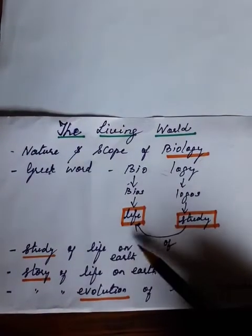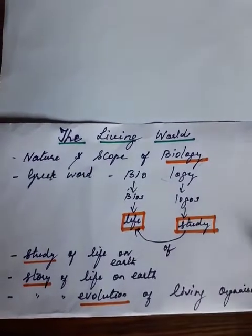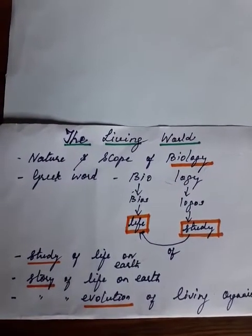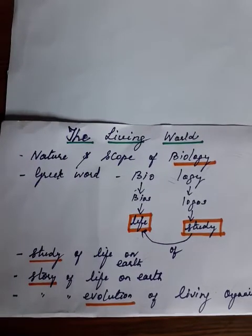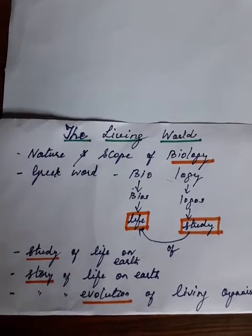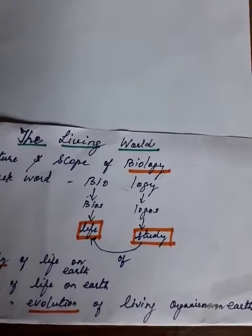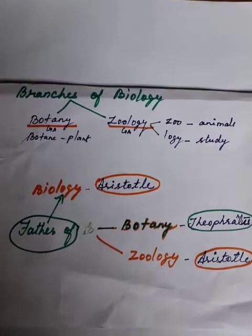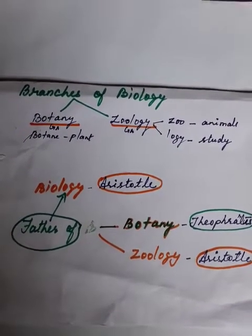What is the scope of biology? It is the study of life on Earth — the story of life on Earth, how life has evolved, the story of evolution of living organisms on Earth. Next, what are the branches of biology? There are two branches.